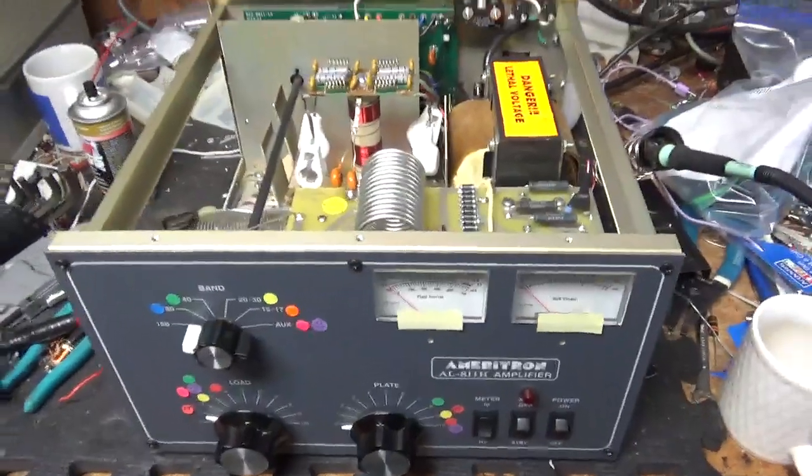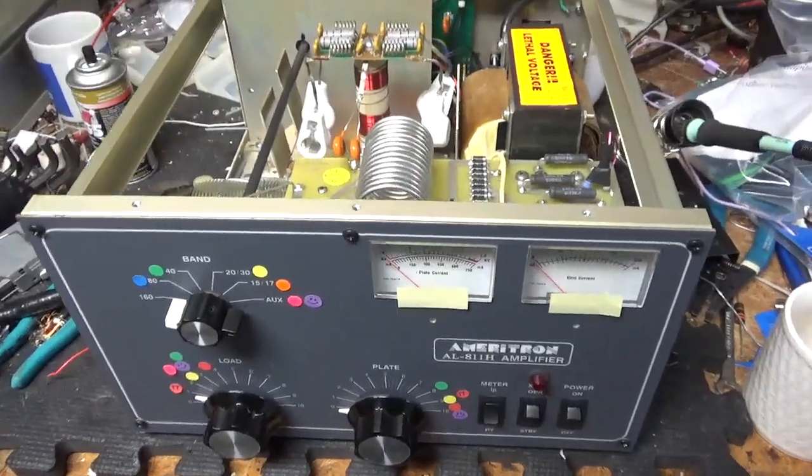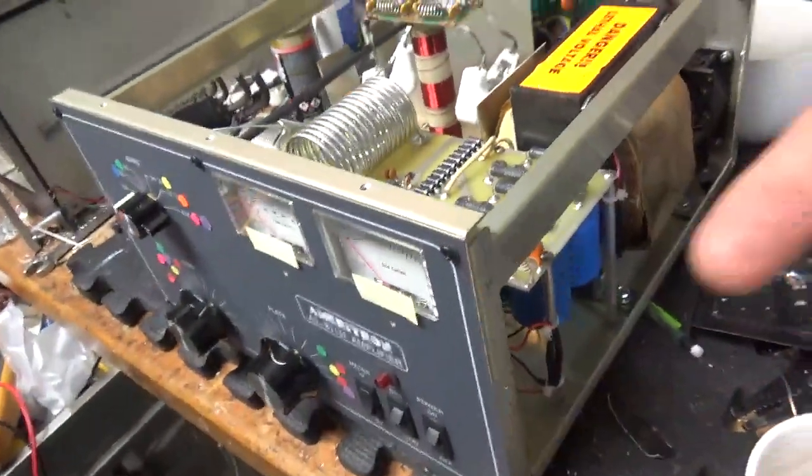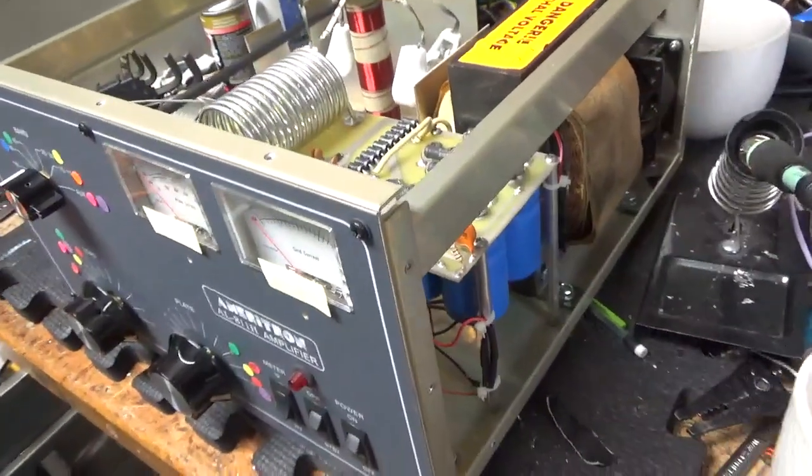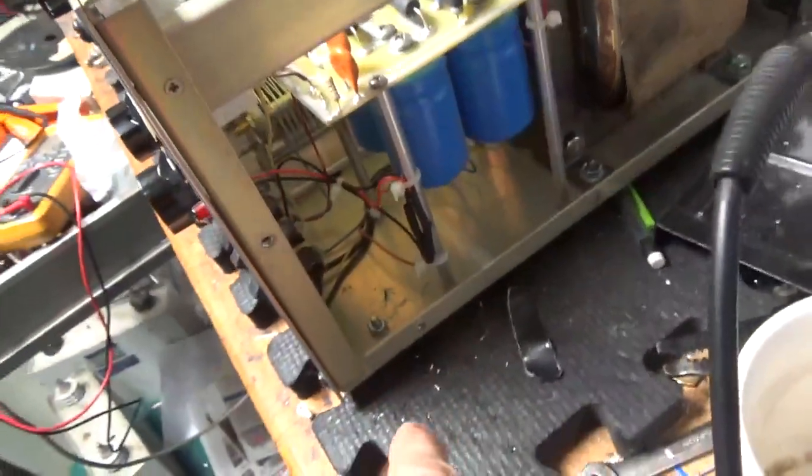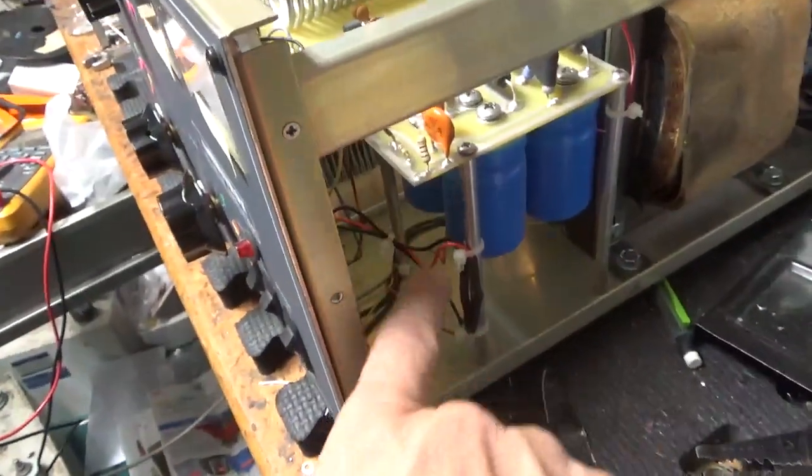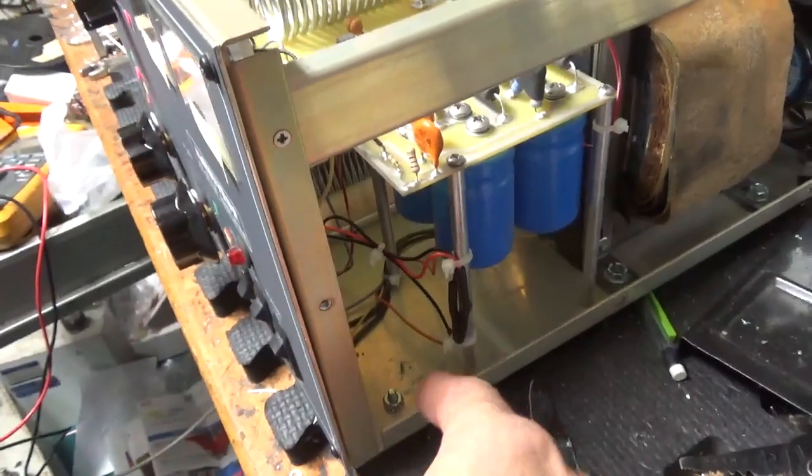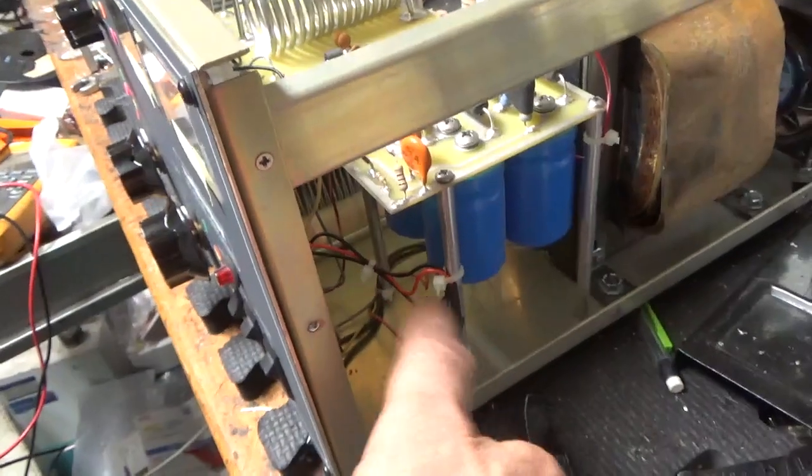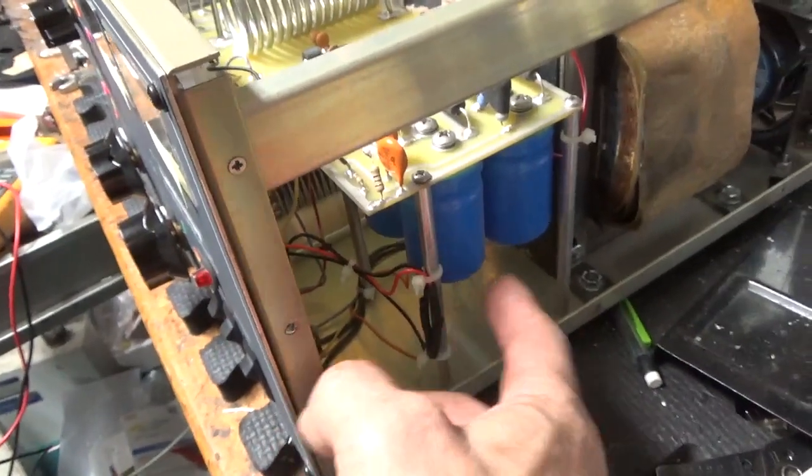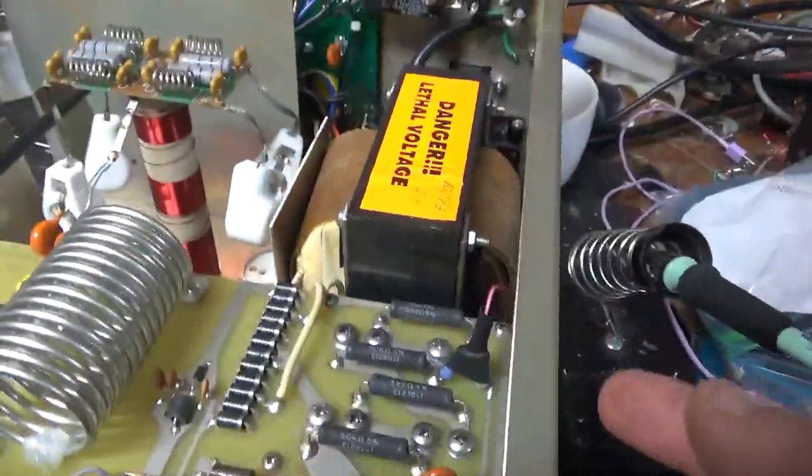I'm back with the completed Ameritron AL-811H. Works on all bands. I'll go over everything I did real quick. So he had like an LED strip, but it wasn't connected. And he went in here and added this different indicator right here. And he had wire nuts on the leads. So I ended all that and pre-stripped them, soldered them, heat shrunk them, and attached the wires to the standoff right here.